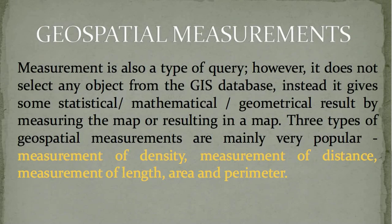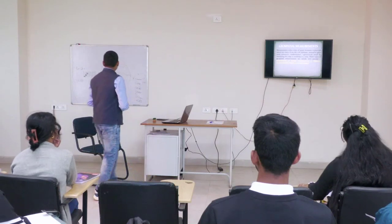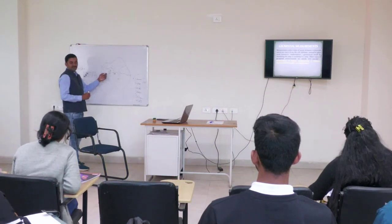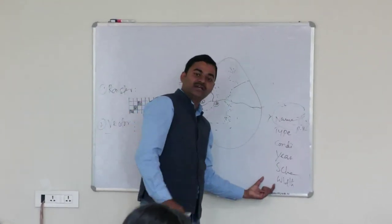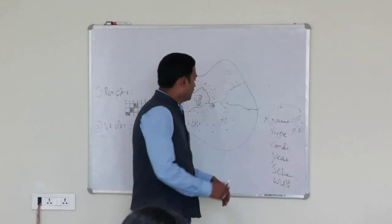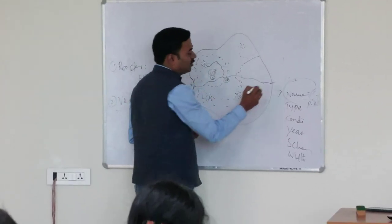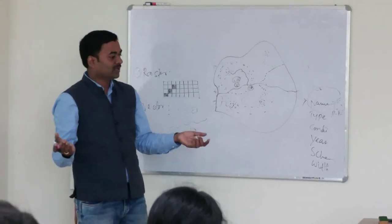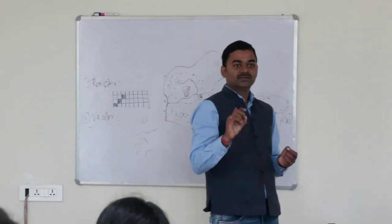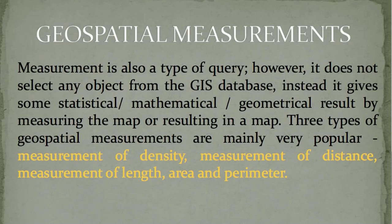We also have spatial measurements — measurement of density, distance, length, and area. Any spatial feature you see in GIS, you can quickly measure it. There are measurement tools, and when you extract data into a table, the length or area will be stored automatically. For example, what is the length of the road from here to here? Quickly you can analyze any feature — not only road, it may be water body, agricultural land, or a building. All geospatial measurements can be done using these three types: point, line, and polygon.